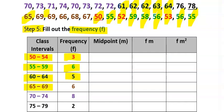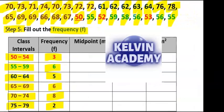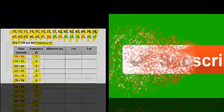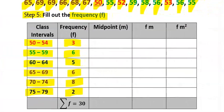From 65 to 69, we count six values, so frequency is 6. From 70 to 74, we count eight values, so frequency is 8. From 75 to 79, we count two values, so frequency is 2. The total — 3 + 6 + 5 + 6 + 8 + 2 — gives us a sum of 30.